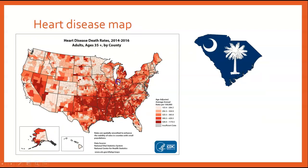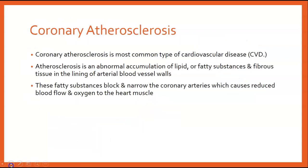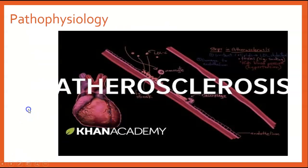The heart disease map here — we went over this in class — just gives you a sense of the death rate. When you go to the PowerPoint yourself, if you click on it, it will take you to an interactive where you can look at heart disease in South Carolina. Coronary atherosclerosis, talking about the heart itself, is the most common type of cardiovascular disease. Atherosclerosis is the abnormal accumulation of lipids or fatty substances and fibrous tissue in the lining of the arterial blood vessel walls. These fatty substances block and narrow the coronary arteries, causing reduced blood flow and oxygen to the heart muscle.